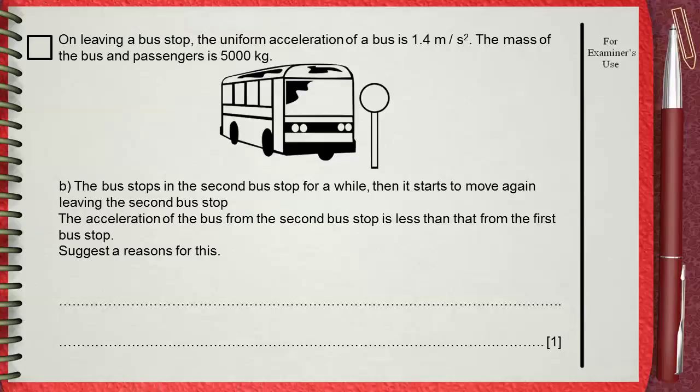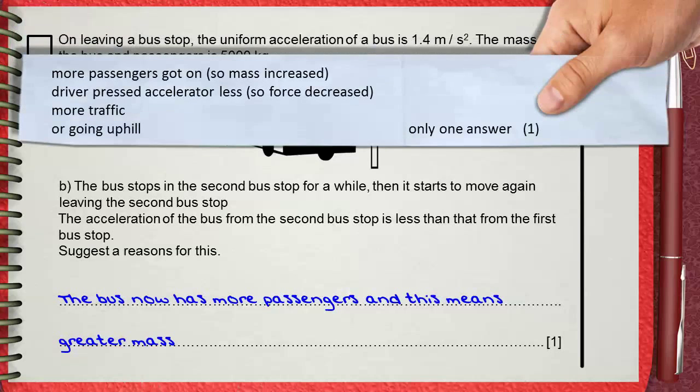So we can say the bus now has more passengers and this means greater mass. Of course, greater mass will cause the acceleration to be smaller. The mark scheme gives more options.